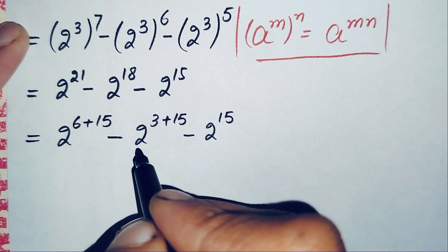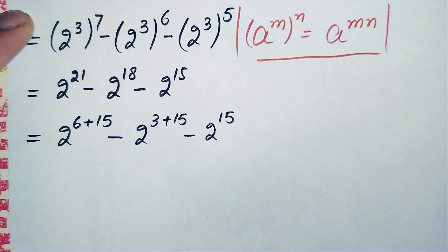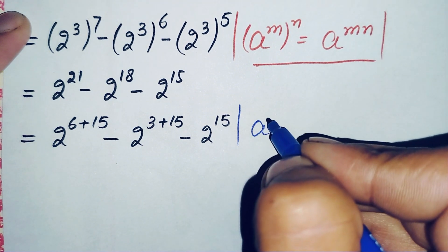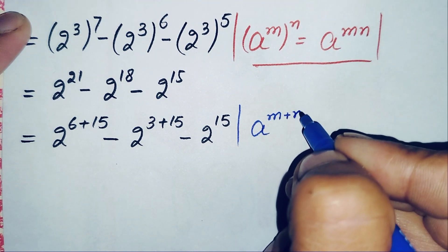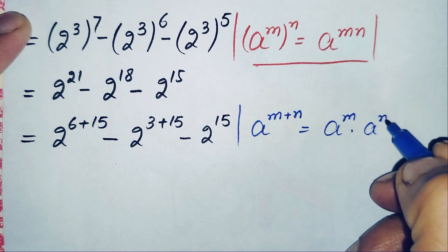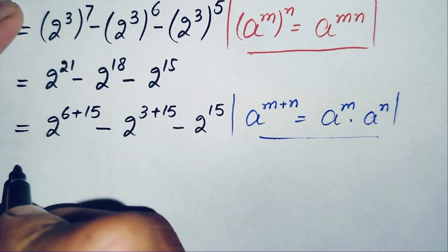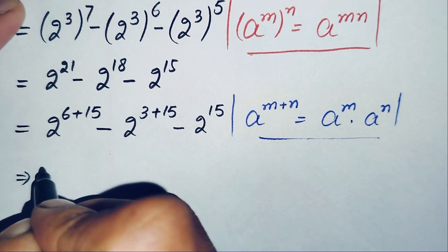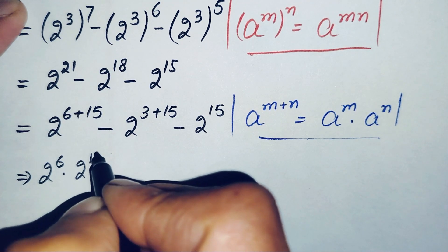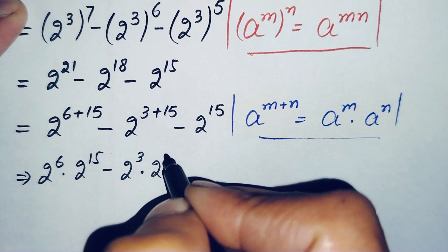In these two terms we will use another exponential identity to split these powers with base 2. The identity is: r raised to power m plus n, which can also be written as r raised to power m times r raised to power n. Using this identity, this will become: 2^6 times 2^15 minus 2^3 times 2^15 minus 2^15.